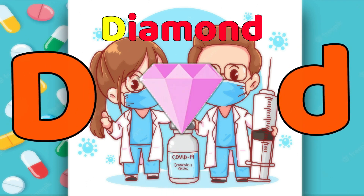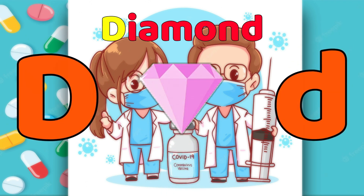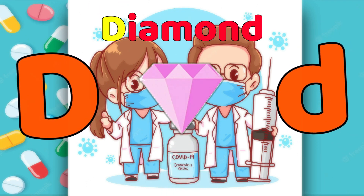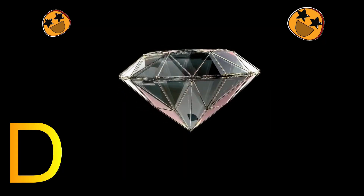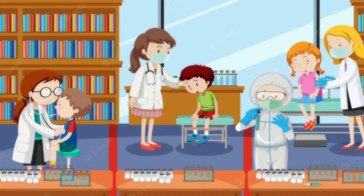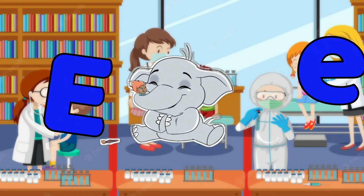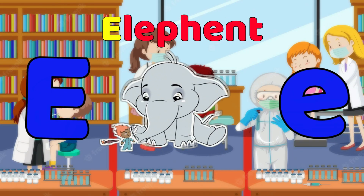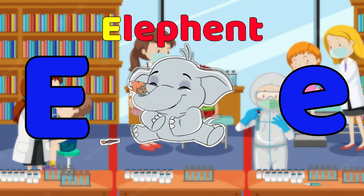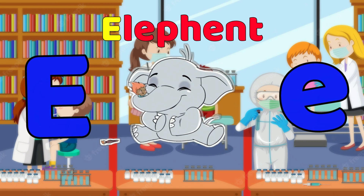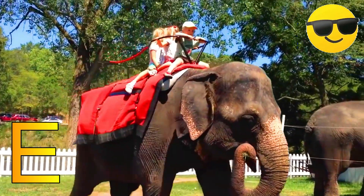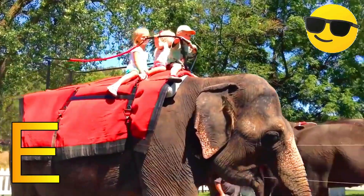D is for Diamond. D, Diamond. D, Diamond. D, Diamond. E is for Elephant. E, Elephant. E, Elephant. E, Elephant.